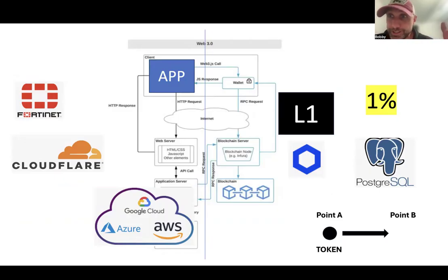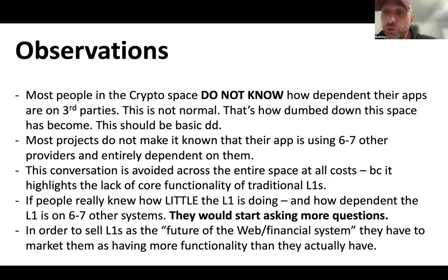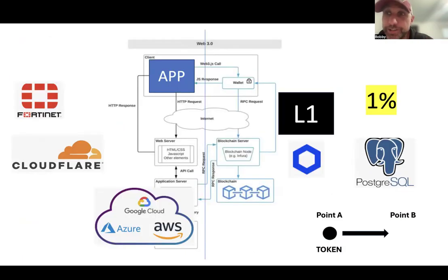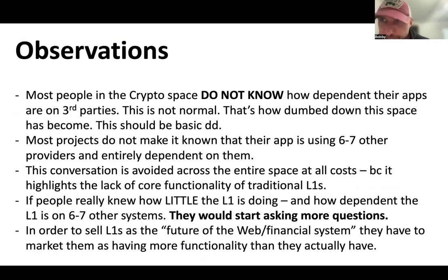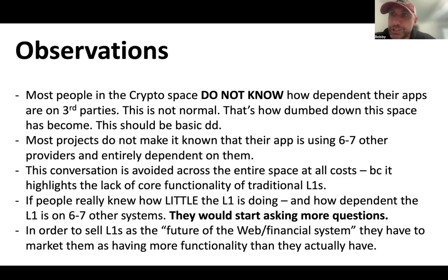Six, seven, eight, nine, ten, twelve, fifteen different systems all tied in together, communicating via API calls. But the too many systems model creates so many other problems, and all the rest of this industry has done is replicate that model — so they're not actually solving the problems of Web2. The conversation is avoided like the plague across the entire space because it highlights the lack of core functionality of these layer ones. If people really knew how little the layer one was doing and how dependent the whole model is on Web2 systems, they would probably start asking more questions. Architecture and the number of dependencies involved is one of the most important conversations you should be having, but it never happens — and it never happens for a reason.